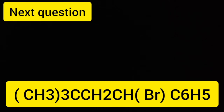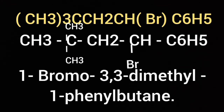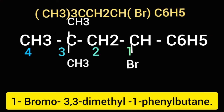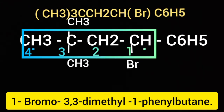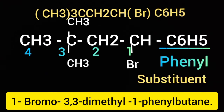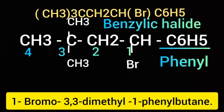Let us write the expanded structure. The IUPAC name of this compound is 1-bromo-3,3-dimethyl-1-phenylbutane. Benzene contains six carbon atoms, but the parent chain contains four carbon atoms here, because bromine is connected to the parent chain. So benzene is treated as a substituent and written as phenyl, connected to number one position. This is a benzylic halide.